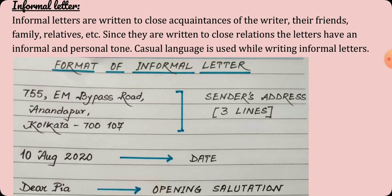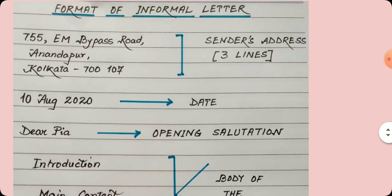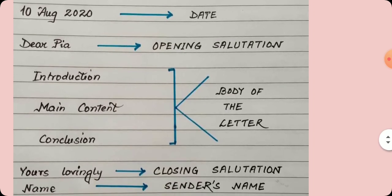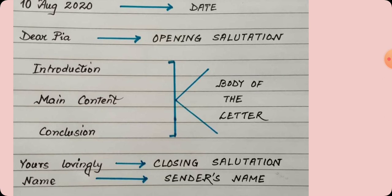Again, we have a proper format for an informal letter. We have to write the sender's address in three lines again. After leaving a gap of one line, the date in proper format. Then again after leaving a gap of one line, we write 'Dear' followed by the name of your friend — that is your opening salutation. Then you leave a gap of one line and write the body of the letter. Like the formal letter, this body should also contain a proper introduction, main content, and conclusion. Then leave a gap of one line and write 'Yours lovingly', which is your closing salutation.